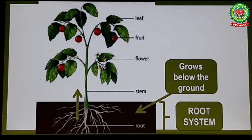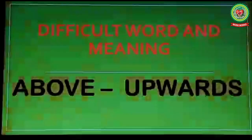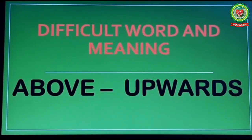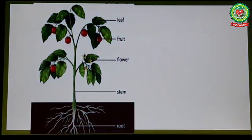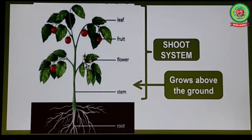The part of a plant which grows above the ground is called the shoot system. Underline the word 'above' and write its meaning: upwards. Look at this picture — this part of the plant is called the shoot system. It grows above the ground and it bears stem, flower, fruit, leaf, and many other different parts of the plant.